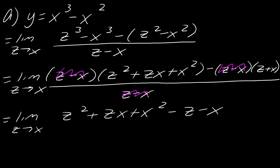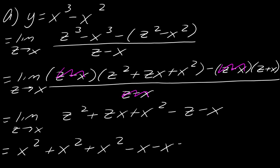Now I can evaluate this limit by replacing z with x. This becomes x squared plus x squared plus x squared, minus (x plus x), which equals 3x squared minus 2x. So that is the derivative.